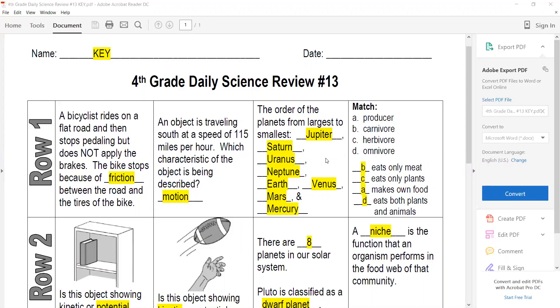Eats only meat is carnivore. Eats only plants is herbivore. Makes its own food is producer. And eats both plants and animals is omnivore.